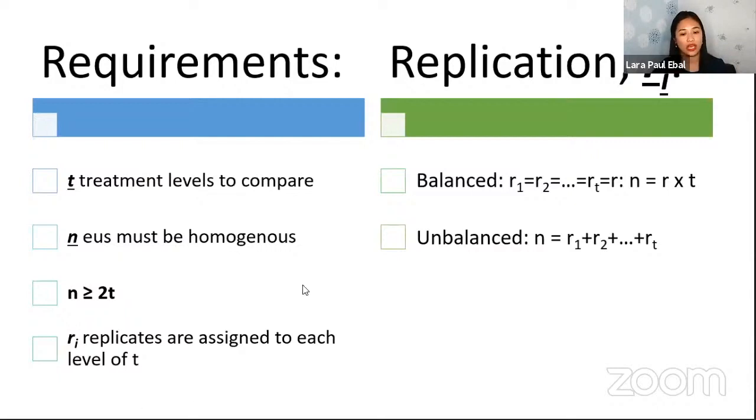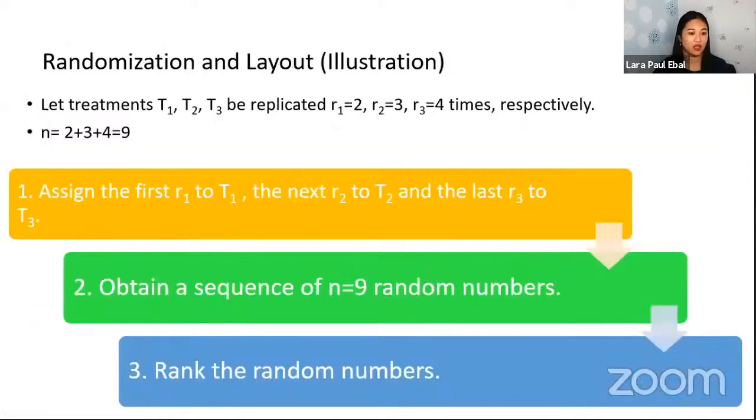So now these replicates can have the same number. We have R1 equal to R2 equal to RT, so we can now have a balanced design. Now for an unbalanced design, we cannot sometimes afford to have more replicates for a certain level because it's expensive, so we also have this unbalanced design or experiment.